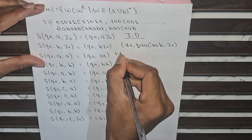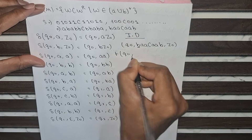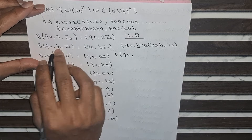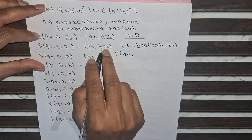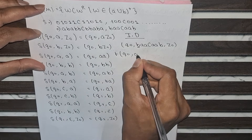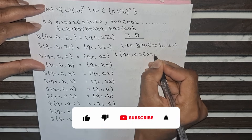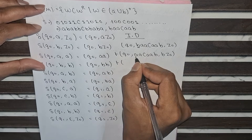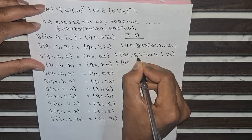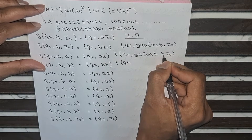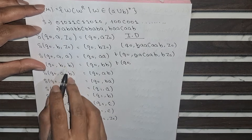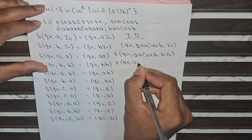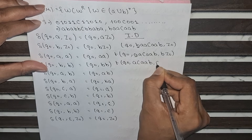Starting the ID trace: the top of the stack is Z0, the input symbol is B, and the state is Q0 — so we push B onto the stack. The configuration becomes (Q0, AACAAB, BZ0). Next, the input symbol is A and the top of the stack is B, so we push A on top of B. The configuration becomes (Q0, ACAAB, ABZ0).